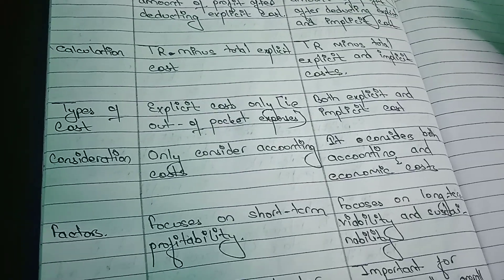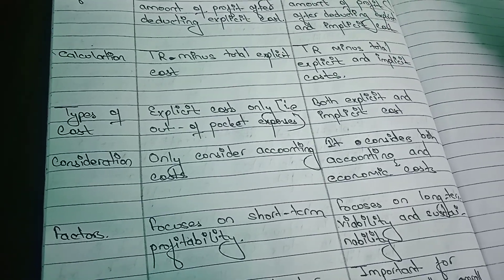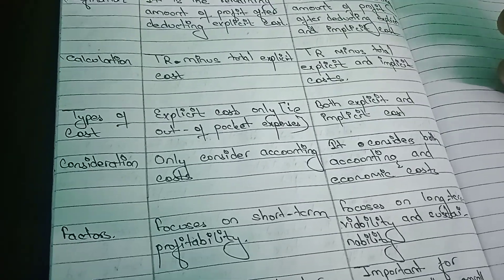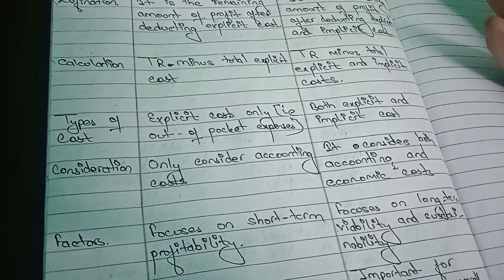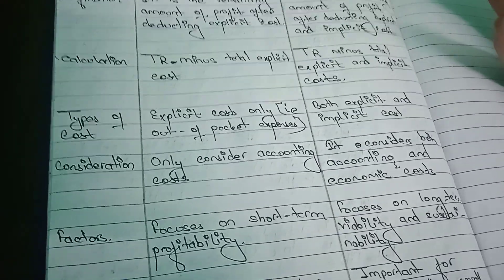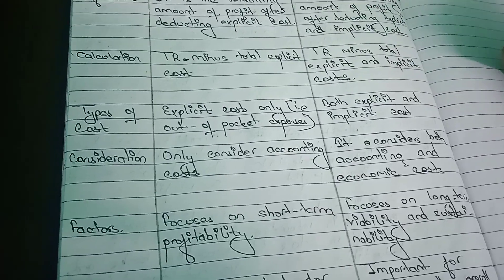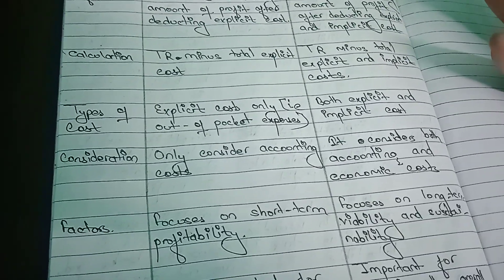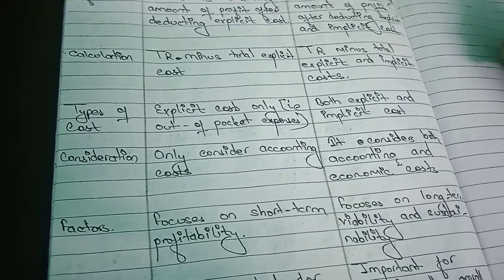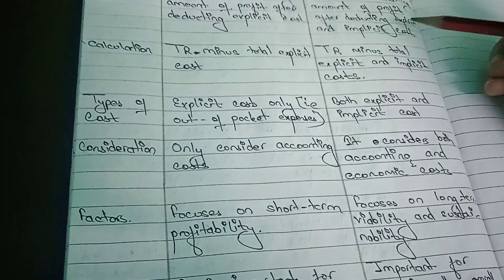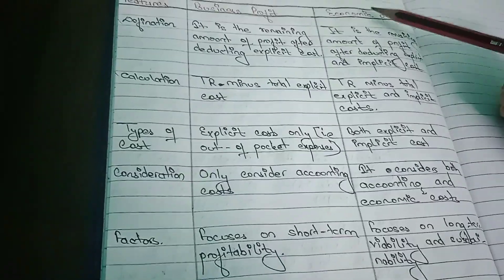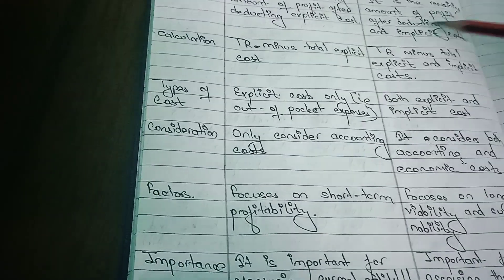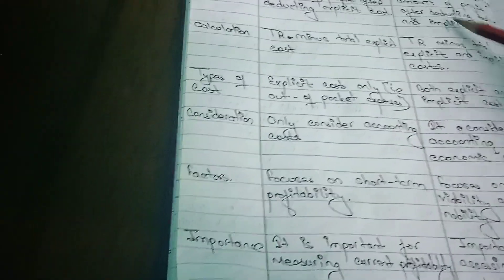For example, if you could work in a company for $500,000, but instead you run your own business, then that foregone salary is the implicit cost — the economic opportunity cost. Economic profit is the remaining amount of profit after deducting both explicit and implicit cost.